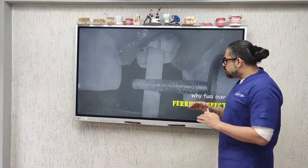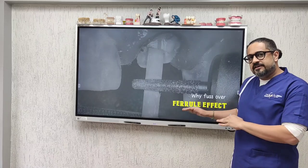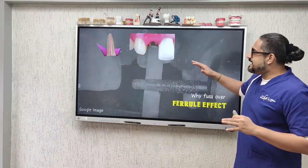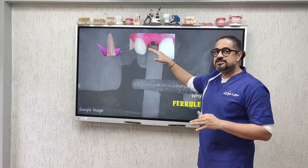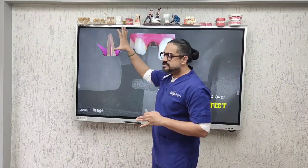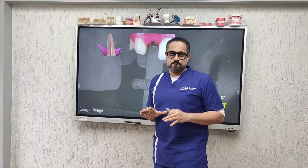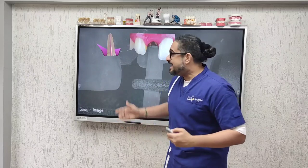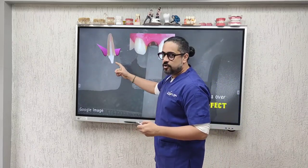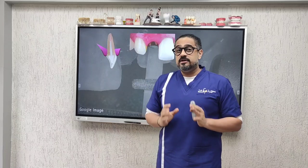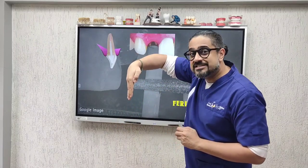Remember, this ferrule is the most important structural element that determines the longevity and the health of your abutment tooth. Let me explain why there is so much fuss about the ferrule effect. Let me first take an example where the abutment tooth is fractured at the gingival level. It's very important to understand, especially for anterior teeth, that front anterior incisors are never straight.